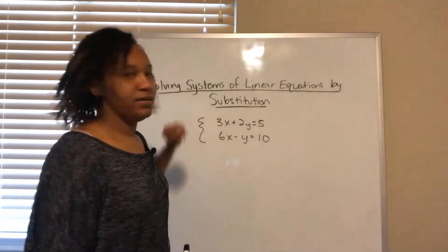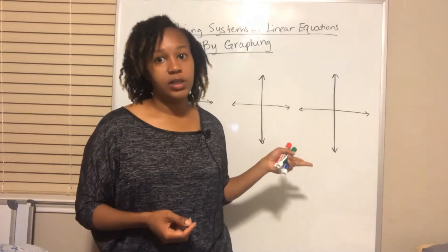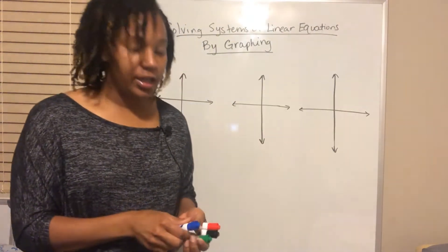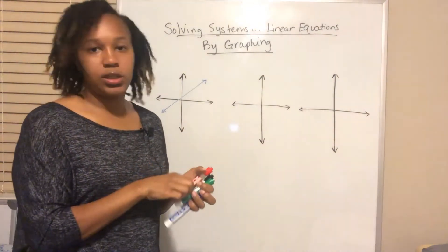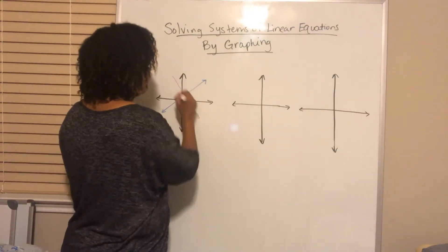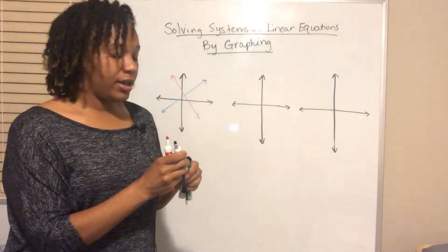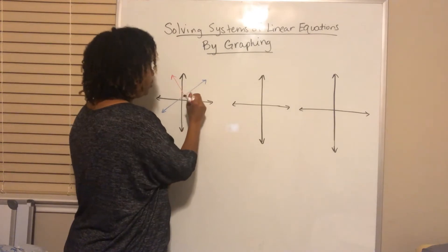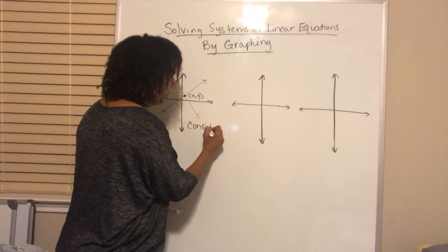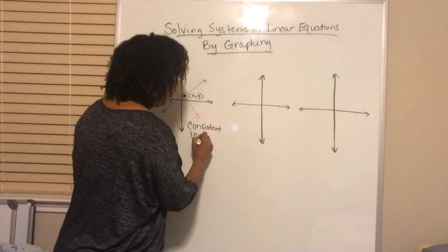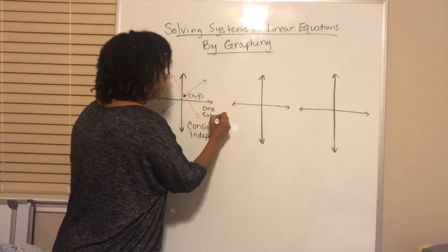When you solve a system of linear equations with two equations, there are three possible scenarios. The first case is you can have two separate graphs — since they're linear equations, each graph is a line. The two lines intersect in one point, and that point is the solution: the x and y value that makes both equations true at the same time. This is called a consistent independent system — consistent means there is a solution, independent means the lines are independent of each other. There is one solution.